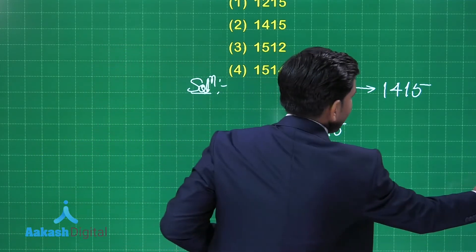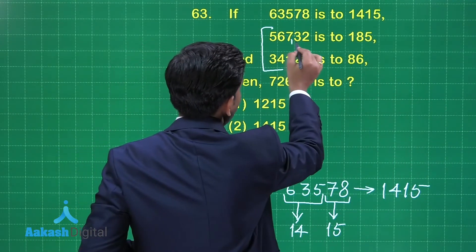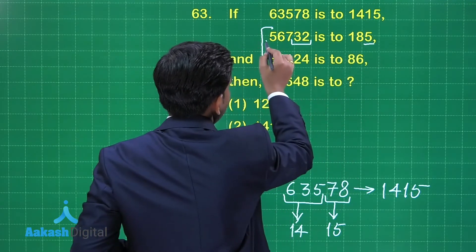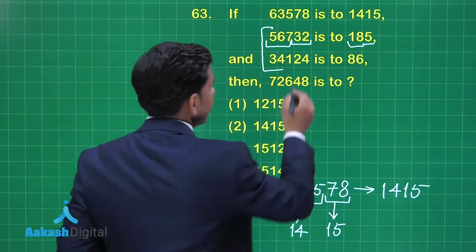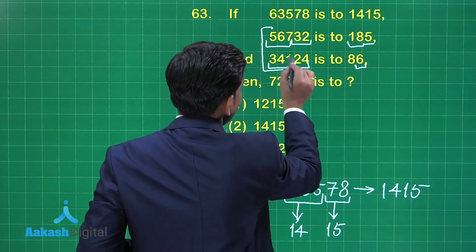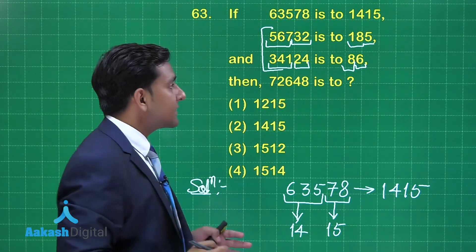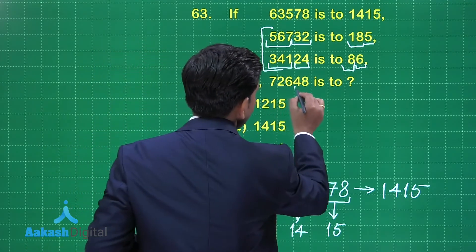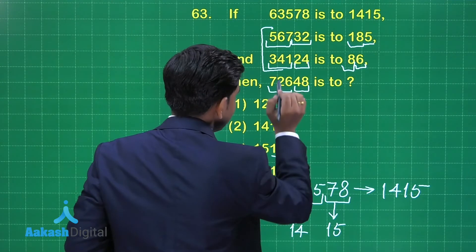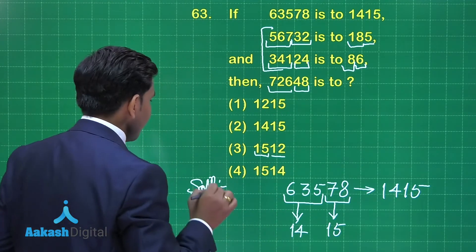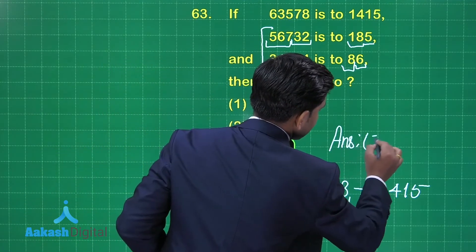This coding pattern is also applicable for the other numbers. For 56,732, adding 3 and 2 gives 5, and 5 plus 6 plus 7 gives 18. For 34,124, adding 2 and 4 gives 6, and 3 plus 4 plus 1 gives 8. Applying the same pattern to 72,648: 4 plus 8 equals 12, and 7 plus 2 plus 6 equals 15. So option number 3 is the correct answer.